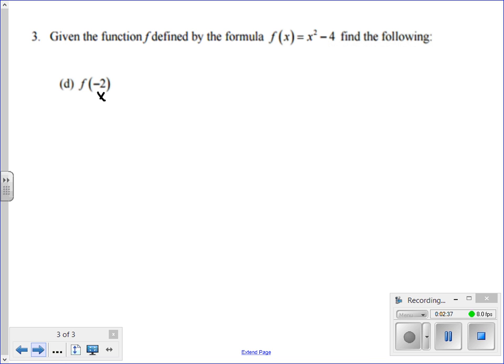Now negative 2 here is an x. We know that because it's in the parentheses. When I have negative 2, I'm going to put it in for x. When I substitute a value into a function, I have to put it in parentheses. Negative 2 in parentheses squared minus 4.